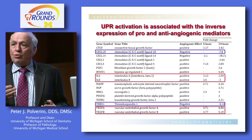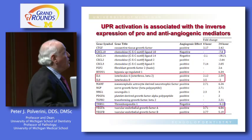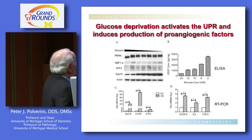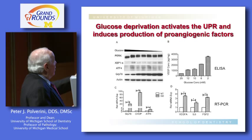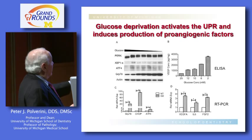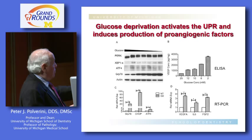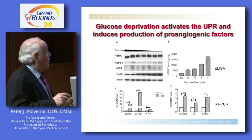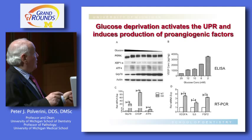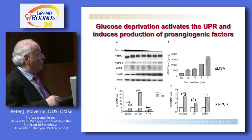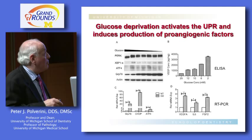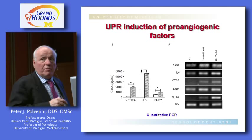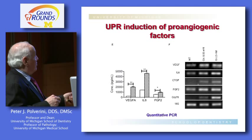Looking at experiments using decreasing concentrations of glucose, we activate CHOP, GRP78, and activating transcription factor IV. By ELISA or RT-PCR, there is a significant increase in vascular endothelial growth factor, IL-6, and fibroblast growth factor II — all three of which can stimulate blood vessel growth. By quantitative PCR, we see similar increases in VEGF, IL-6, and fibroblast growth factor II in cells that have been glucose-deprived and are under stress.